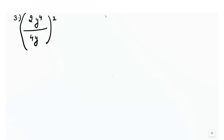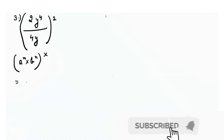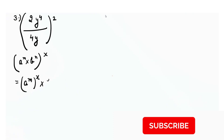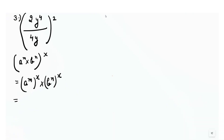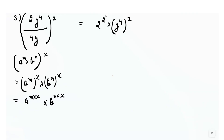In this question we use another rule of exponents: a raised to power m times b raised to power n, all raised to power x, equals a raised to power m times x times b raised to power n times x — we multiply the powers. Since we have values inside a bracket with a power outside, we distribute that power to all values inside the bracket. So we write 2 raised to power 2 times y raised to power 4, the bracket raised to power 2, over 4 raised to power 2 times y raised to power 2.